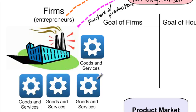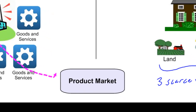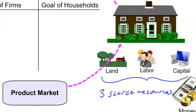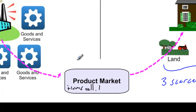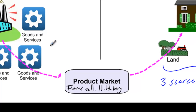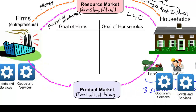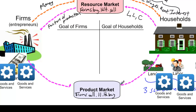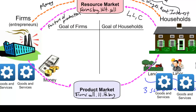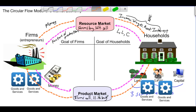Goods and services flow counterclockwise in the product market towards households. In product markets, firms are the suppliers and households are the demanders. Of course, nothing is free — money must flow clockwise from households to firms so that firms are earning the profits they seek. The orange arrow in our circular flow model represents money flowing from households to firms in the product market.